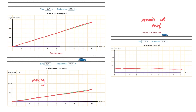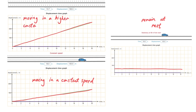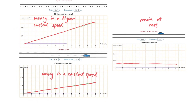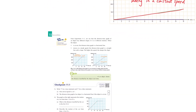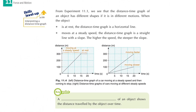If the graph has a slope, we know that the object is moving at a constant speed. And if the slope of the graph is steeper, we know that it is moving at a higher constant speed. So when we look at the slope of the displacement-time graph, we can determine the speed of the object. This is a key item to know when reading a displacement-time graph.